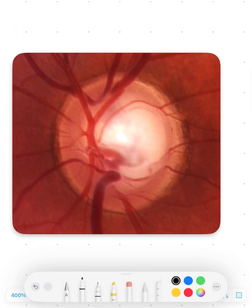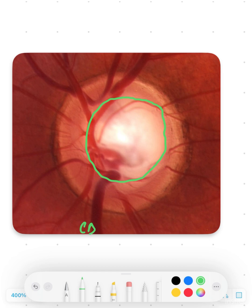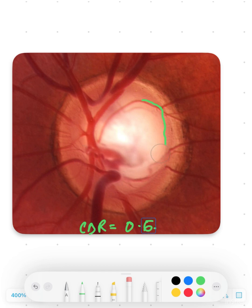Now, what do you think is the cup-disc ratio of this second disc? If you look at it and analyze the yellow part, you might find that this is the cup, giving a CDR of around 0.5 or 0.6. But when we assess it the right way — according to the bend of the vessels — we get a different scenario.